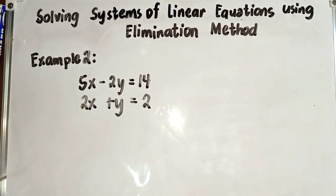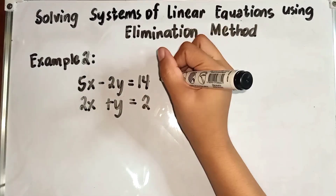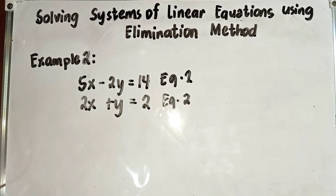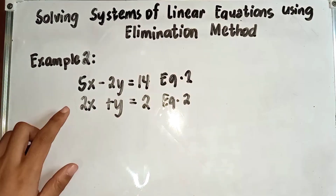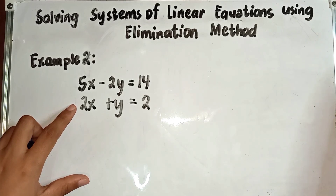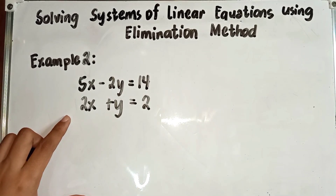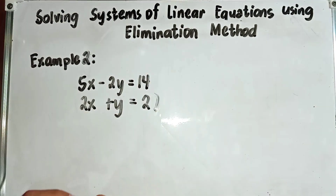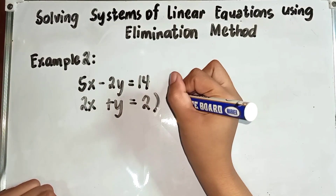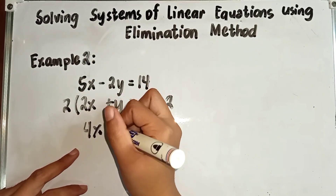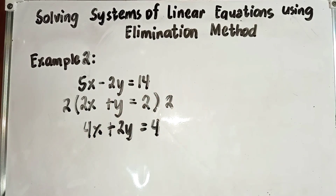Let's have example number 2. We have first equation: 5x minus 2y is equal to 14, and equation 2: 2x plus y is equal to 2. Observe — there are no variables that can be directly eliminated. So we will focus on the second equation. Our target is to cancel out y. We will multiply both sides of equation 2 by positive 2, giving us 4x plus 2y is equal to 4. This will be our new second equation.